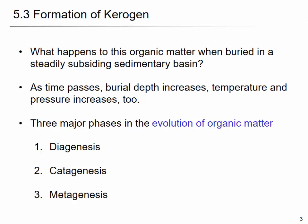We talked about diagenesis, which is the transformation from organic matter to kerogen, and the transformation from kerogen to petroleum is called catagenesis. When you have a hydrocarbon, the ratio of H to C decreases during metagenesis. So at the end of metagenesis, it becomes graphite — just pure carbon. Metagenesis involves the removal of hydrogen and the breakdown of long hydrocarbon chains.